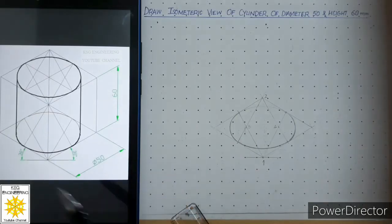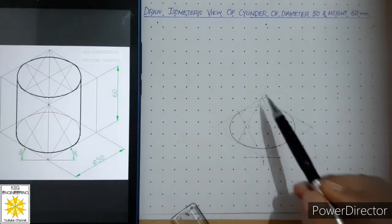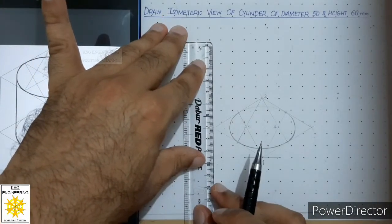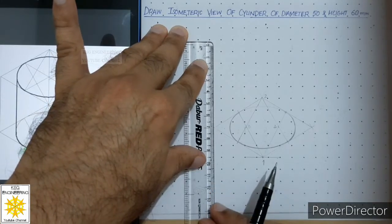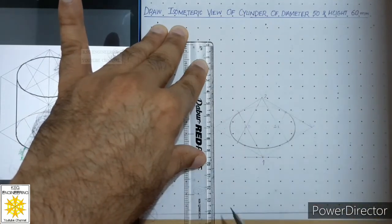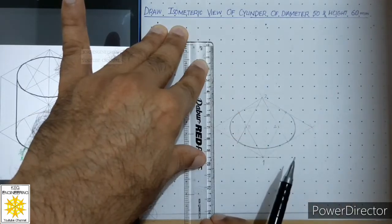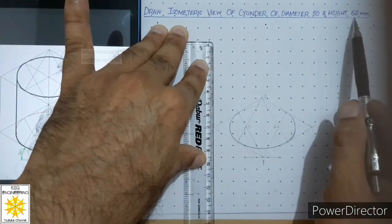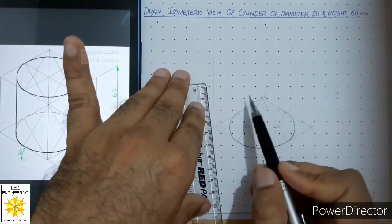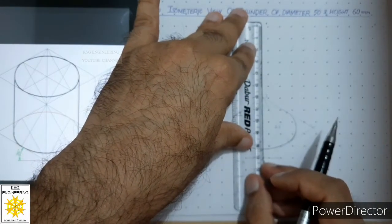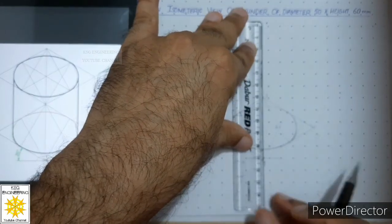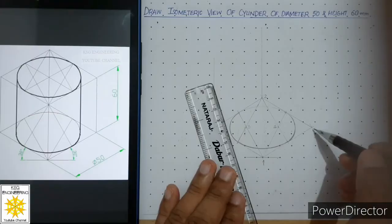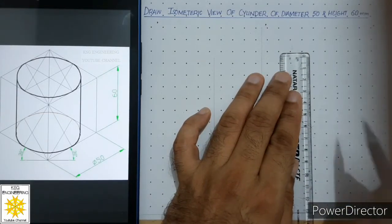To draw the isometric of this box, from these four corner points we will draw vertical continuous thin lines of 60 millimeters. Start from the first point — align your scale vertically, this is a very important step. Check that the distance between the dot and the scale is approximately equal at the bottom and at the top. From this point sketch a continuous thin line of 60 millimeters, equal to the height of the cylinder. Then similarly from the other points draw vertical thin lines of 60 millimeters each.